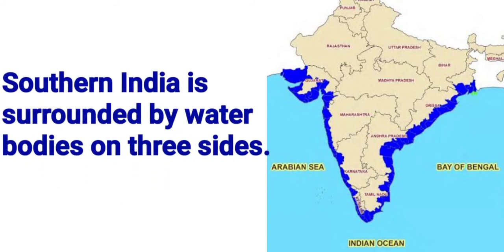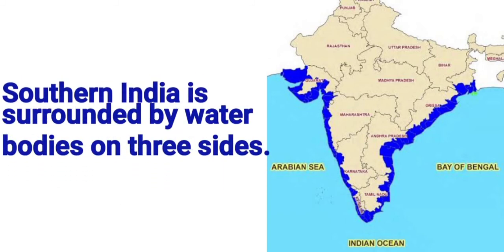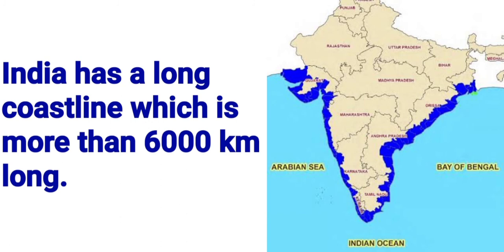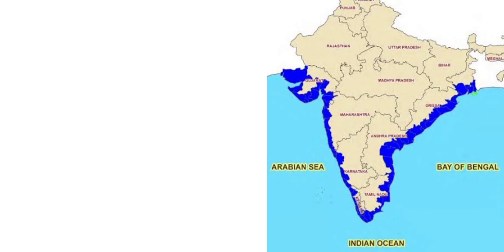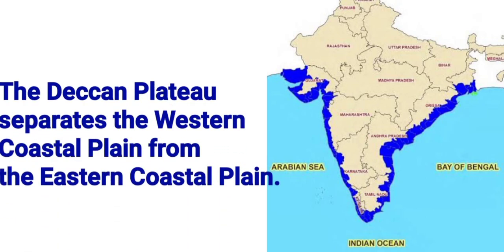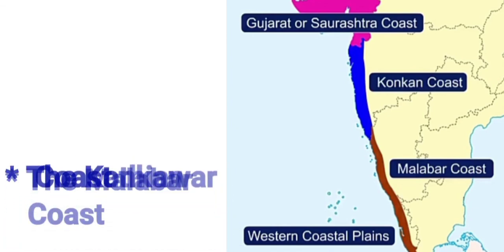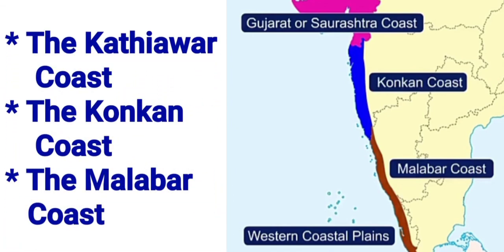We are winding up for today. The rest of the chapter we will complete in the next video. Let us revise what we have studied today: southern India is surrounded by water bodies on three sides, India has a long coastline of more than 6000 km, and the Deccan Plateau separates the western coastal plains from the eastern coastal plains. The western coastal plains are divided into three parts: the Kathiawar coast, the Konkan coast, and the Malabar coast. I hope you have understood the chapter. Do the reading of the chapter and complete your written work. Stay safe, stay healthy. Thank you.